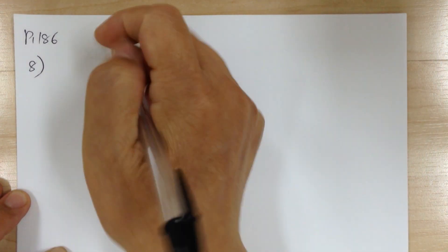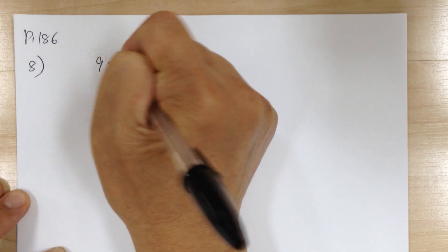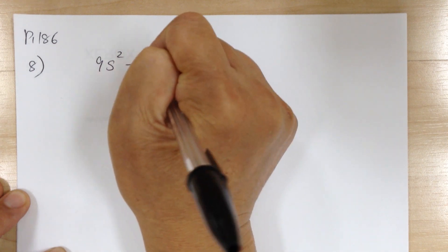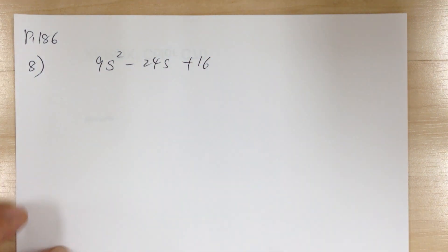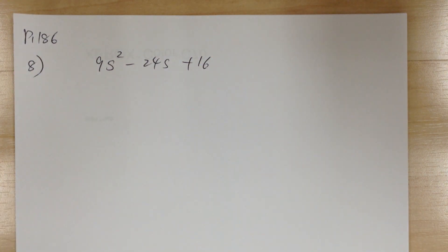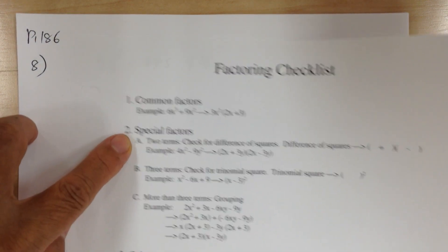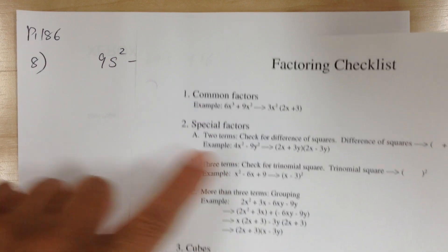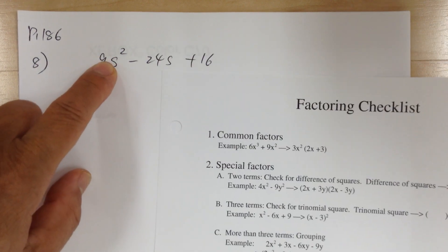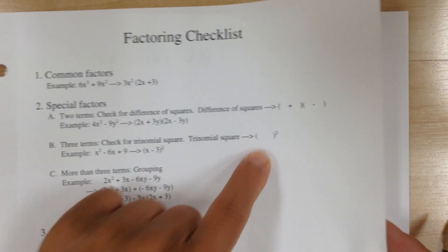Number 8: you have 9s² - 24s + 16. Step 1, common factor — nothing. Step 2: three terms, so check for perfect square. The first and last terms are perfect squares, so try that form. To get 9, I need 3 — since 3² = 9. And I need s, since s² = s². And to get 16, I need 4, since 4² = 16.